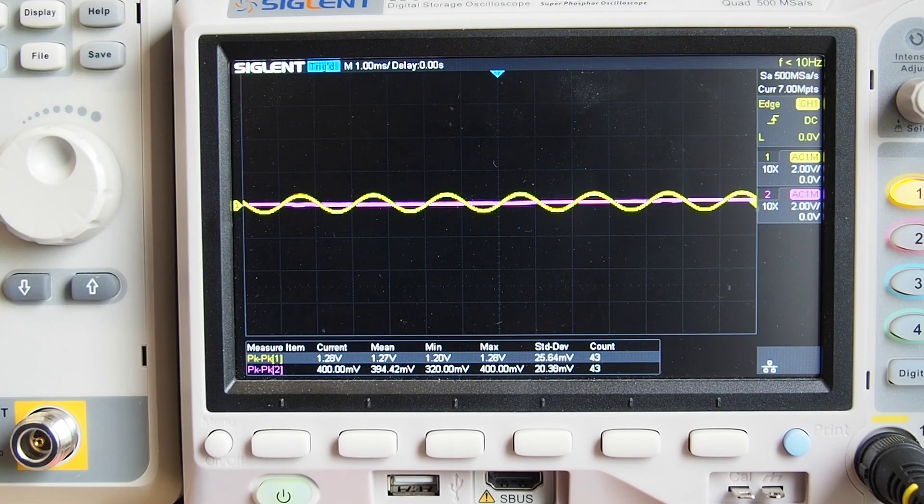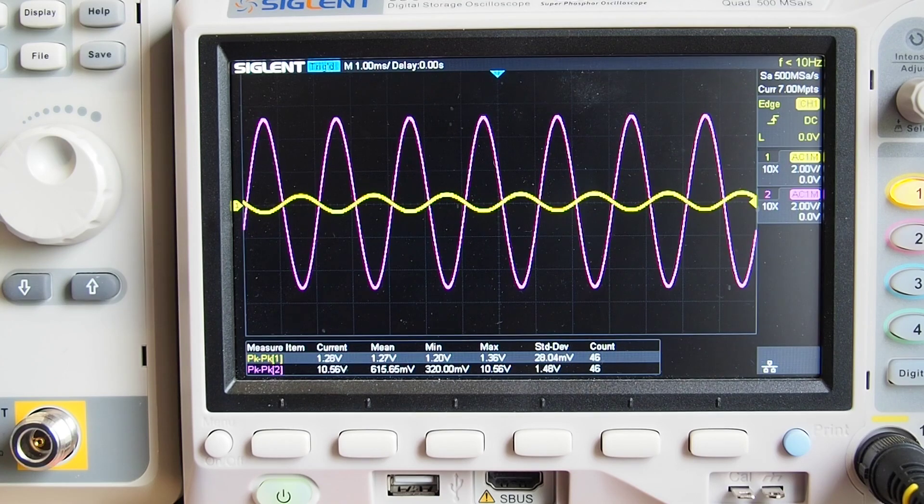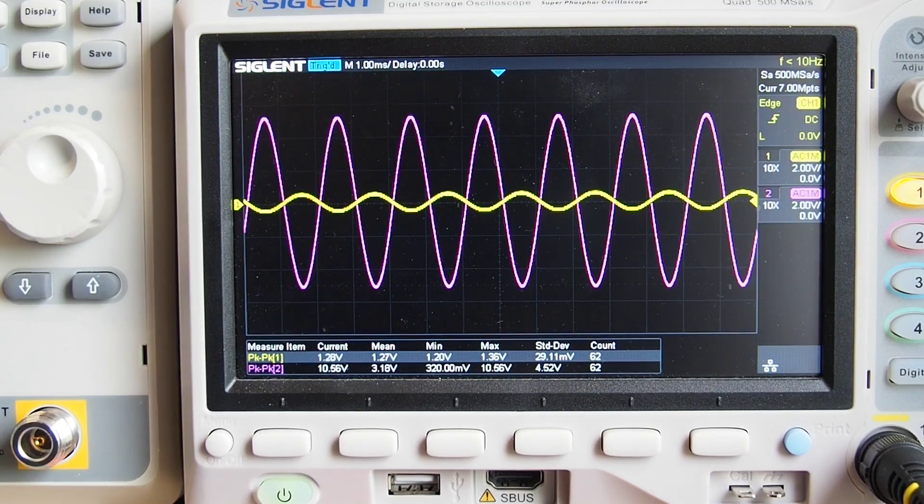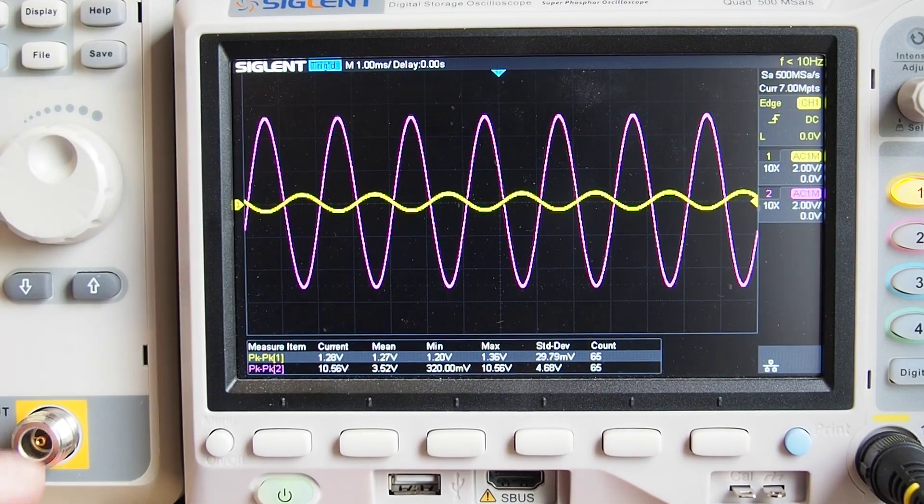And what we get is something that looks incredibly similar, except there is one subtle difference. It's probably not that subtle if you're used to using scopes, and that is that this is an inverting amplifier.